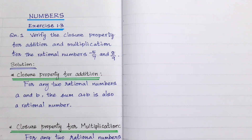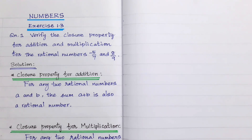Hello dear students, good morning. Welcome back to English and Maths Academy. This is 8th mathematics, Numbers exercise 1.3 question number 1. Verify the closure property for addition and multiplication for the rational numbers minus 5 by 7 and 8 by 9.